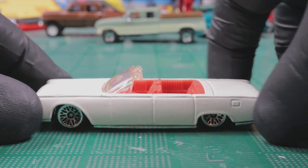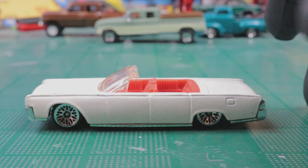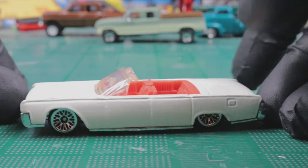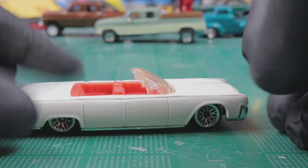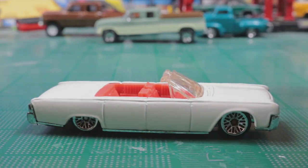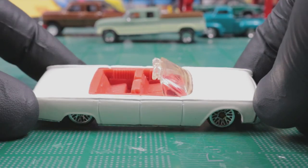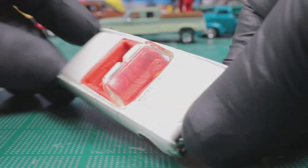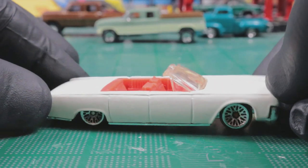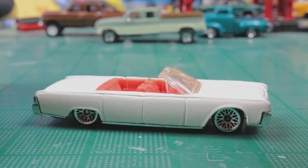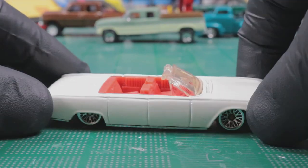Welcome back to Diecast Resurrection. Today we are going to try to do some flames. Here we have a 1964 Lincoln convertible. One of you guys sent this in, I appreciate that. This has got a nice big flat body panel, so it's going to be a perfect candidate for what we're going to do today. We're going to do a little bit of experimenting, and this should be really cool.